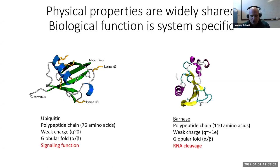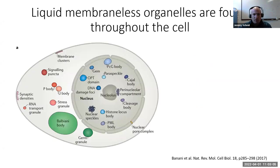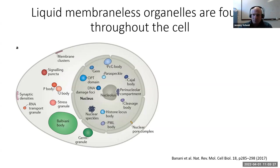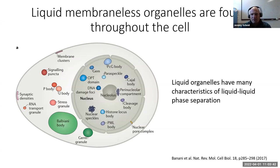Shifting gears, I want to talk about liquid condensates found throughout the cell. Many of these structures have been known since at least the dawn of electron microscopy, but more are being discovered as people look more carefully. The common characteristics are that they tend to be liquid-like, driven by spontaneous condensation of biomolecules, and many have characteristics of liquid-liquid phase separation.